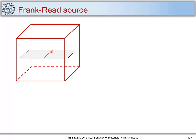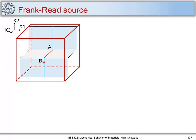Let's consider a crystal with a glide plane and a dislocation line — this is the glide plane for this dislocation. The dislocation is pinned at two points A and B, because there are two planes on which the dislocation line lies but cannot move. The Burgers vector remains invariant for a given dislocation, pointing in one particular direction with the same magnitude throughout.